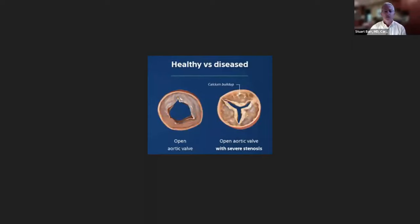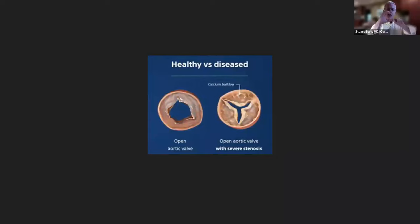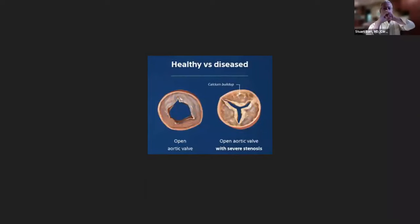It used to be that we had to send people to the operating room to open the chest so a surgeon could replace the valve. Nowadays we do a procedure called TAVR — Transcatheter Aortic Valve Replacement — which we do a lot of at Valley. We go in through your leg, put a balloon into the tight valve, blow up the balloon to crack it open, take the balloon out, and then thread a new valve through your leg. The new valve goes inside the old valve, we expand it, and you have a new valve inside the old one.